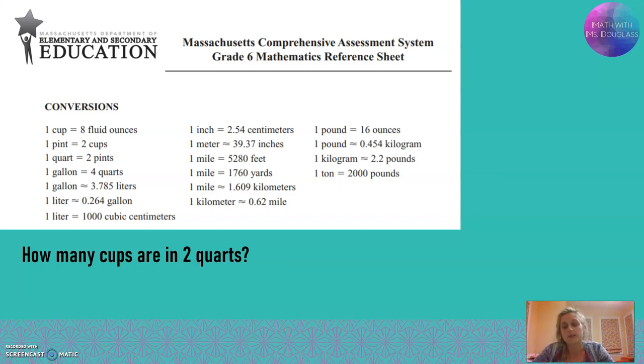So we're going to look at an example. How many cups are in two quarts? I don't know. Let's figure it out. I personally use ratio tables to handle this kind of question. So I'm going to try to look at my conversions and find a cups to quarts conversion. One cup is eight fluid ounces. No, that doesn't help me.